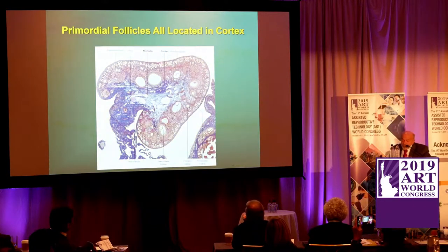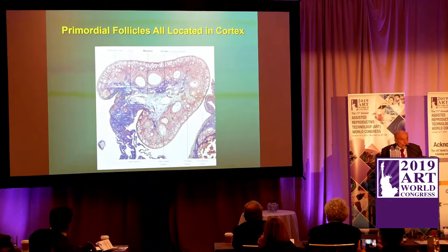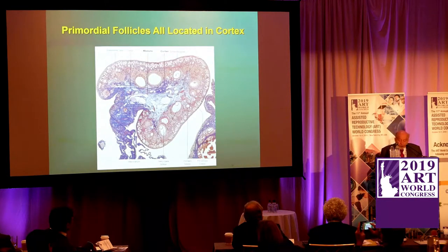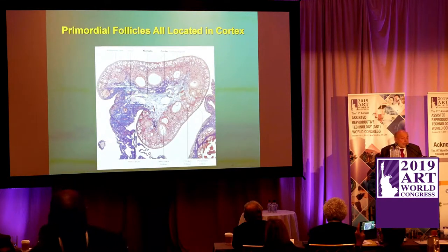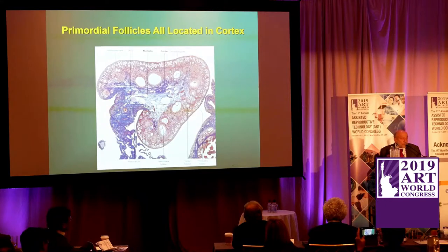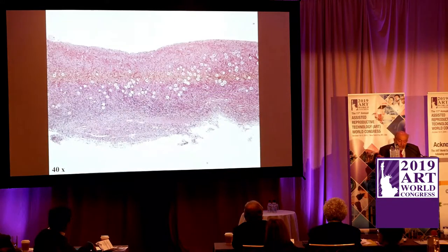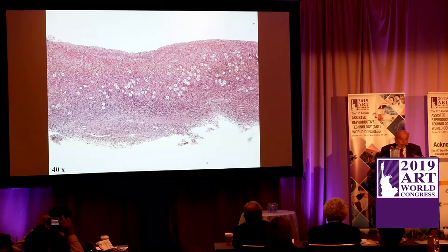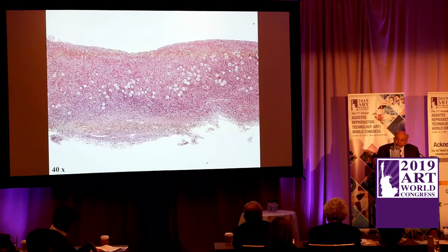Primordial follicles are all located in the cortex, and the cortex is the toughest membrane in the whole body — equivalent to the tunica albuginea in the male. There is no connective tissue, including Achilles tendons, as tough as the ovarian cortex, and that's very important for primordial follicle locking. We can take the outer millimeter or millimeter and a half of the cortex, and that's where all the primordial follicles are located.